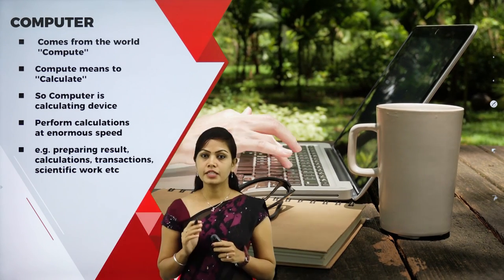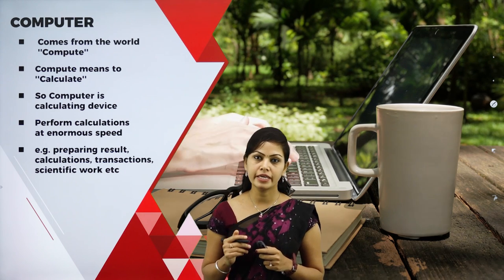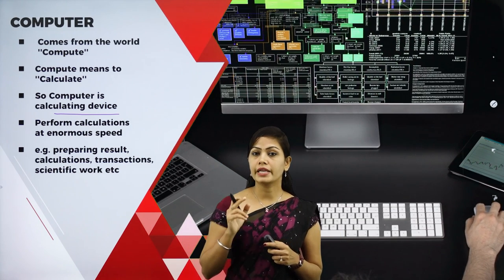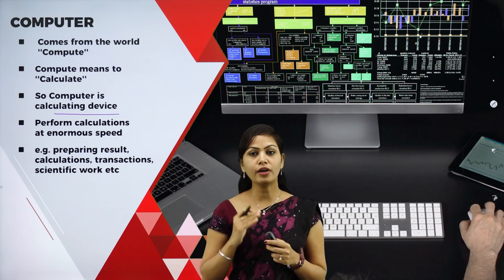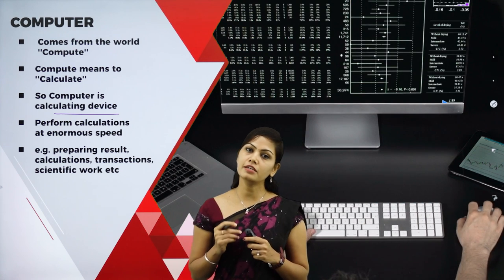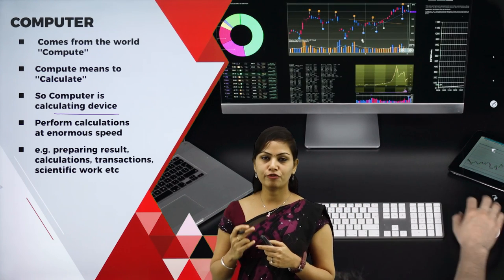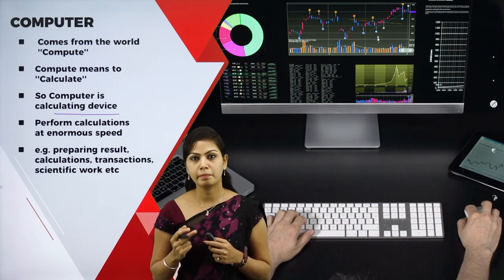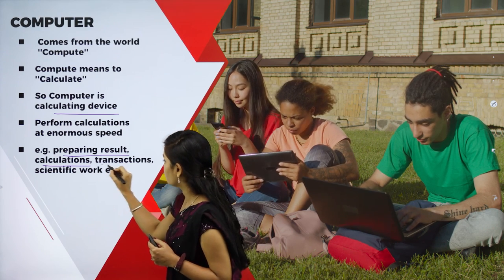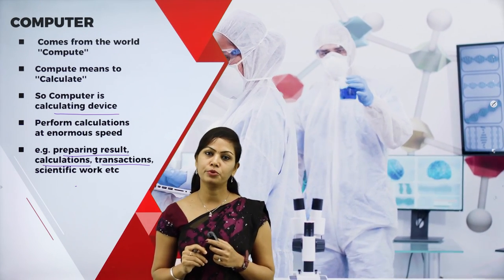The word 'computer' has originated from the Latin term 'compute', which means to calculate. So a computer is a calculating device — millions of calculations can be made in just a fraction of a second. A computer is an electronic data processing device that can store, recall, and process data. It accepts raw data as input, processes it, and produces meaningful information called output.